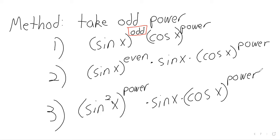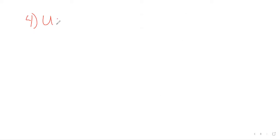Next, we use the Pythagorean identity — it's always going to be the same trick. We'll have the trig function squared to a power, and we apply the Pythagorean identity.